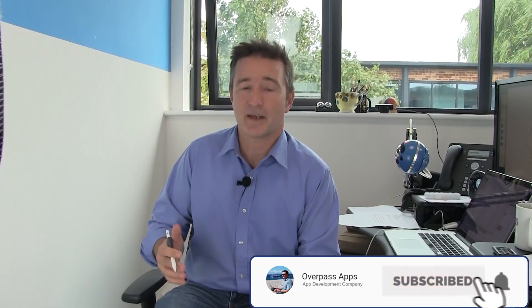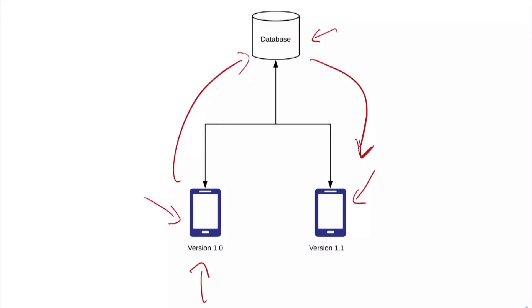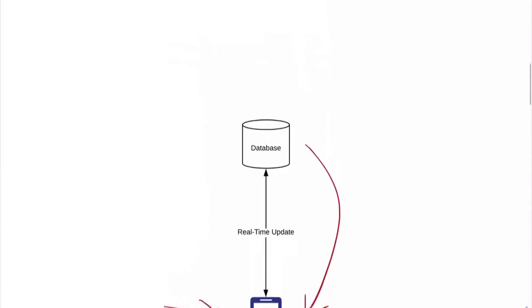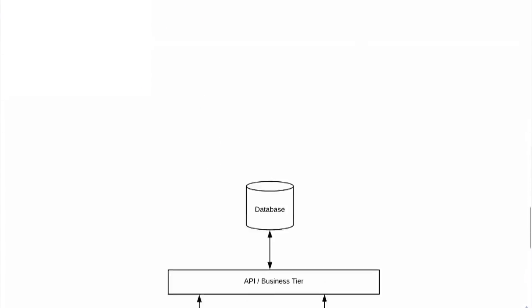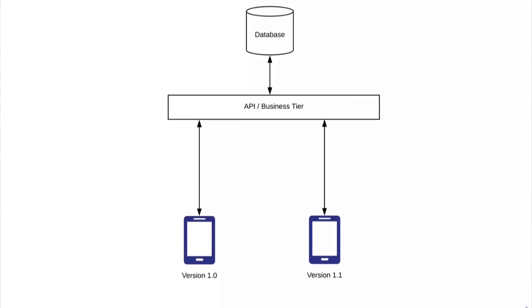One thing about Firebase is you can still have that middle tier by using cloud functions — so even though you're connecting straight to Firebase, you could have cloud functions do the same thing an API does, like 'get customer.' One of the benefits of having an API is you can make sure that apps get the right data in the format they expect.